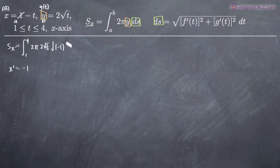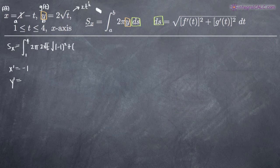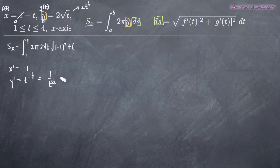We add negative one squared to the derivative of g of t, which is the derivative of our y equation. To find y prime, we convert two times the square root of t to two times t to the one-half. Taking the derivative, we multiply one-half times two — which cancels to one — then subtract one from the exponent to get t to the negative one-half. That converts to one over t to the one-half, which is one over the square root of t. So g prime of t equals one over the square root of t.